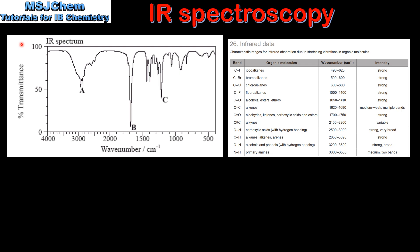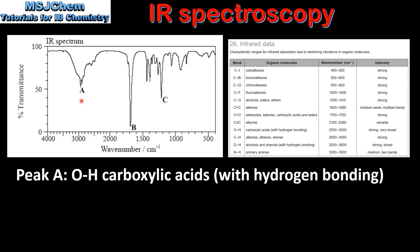We'll start by looking at the infrared spectrum of compound X and we'll use table 26 of the data booklet. Using the data in table 26 we'll identify peaks A, B and C.